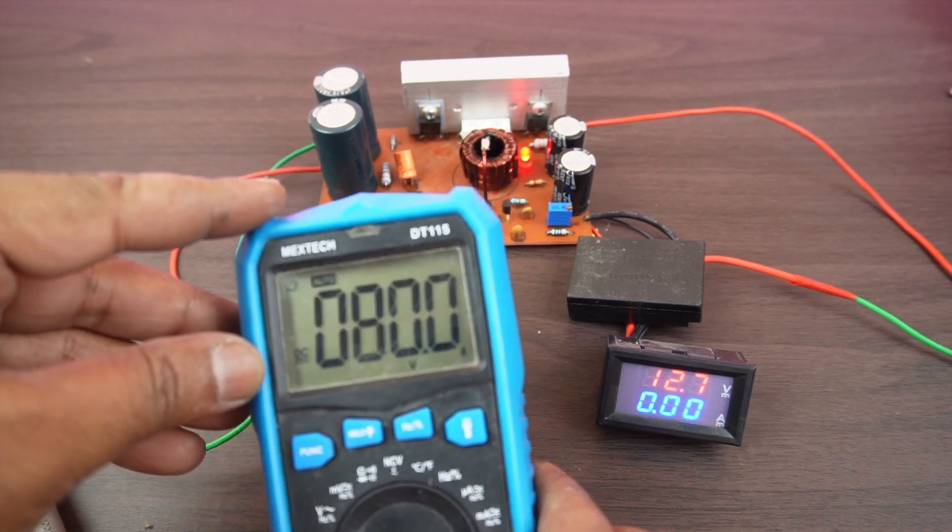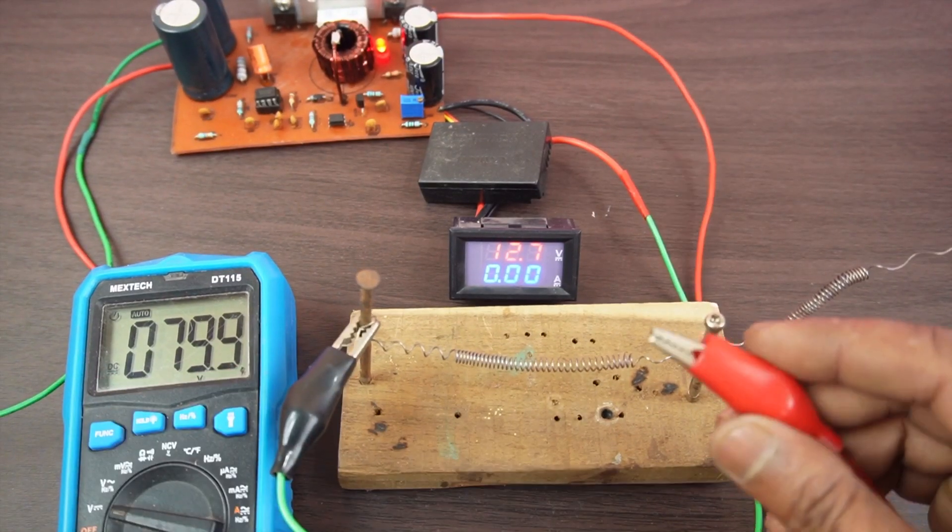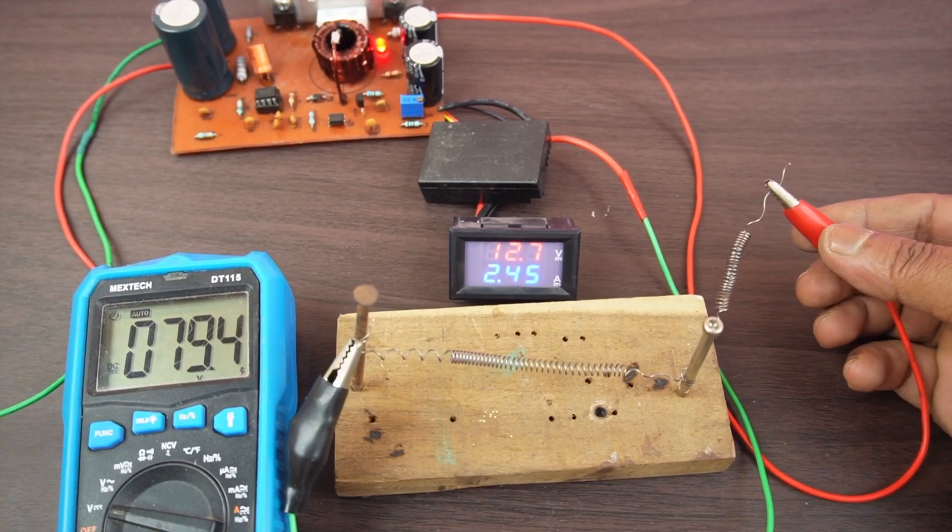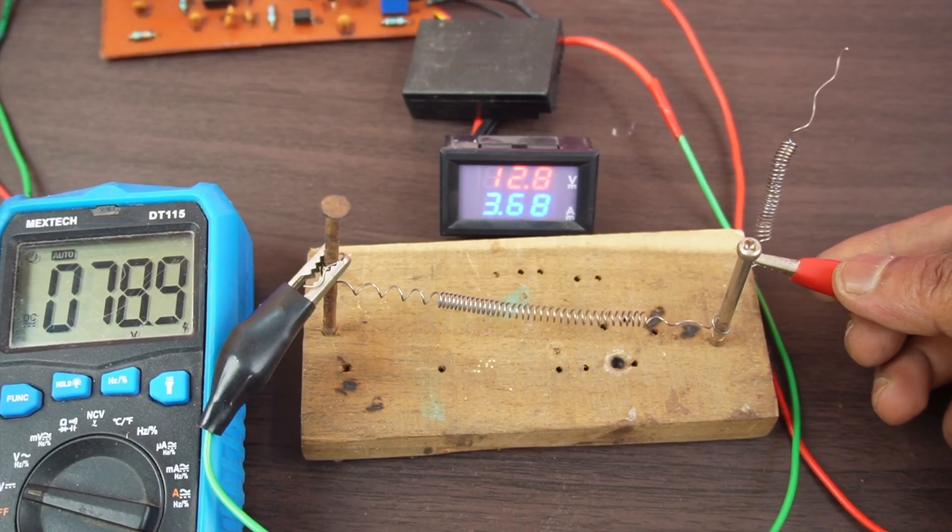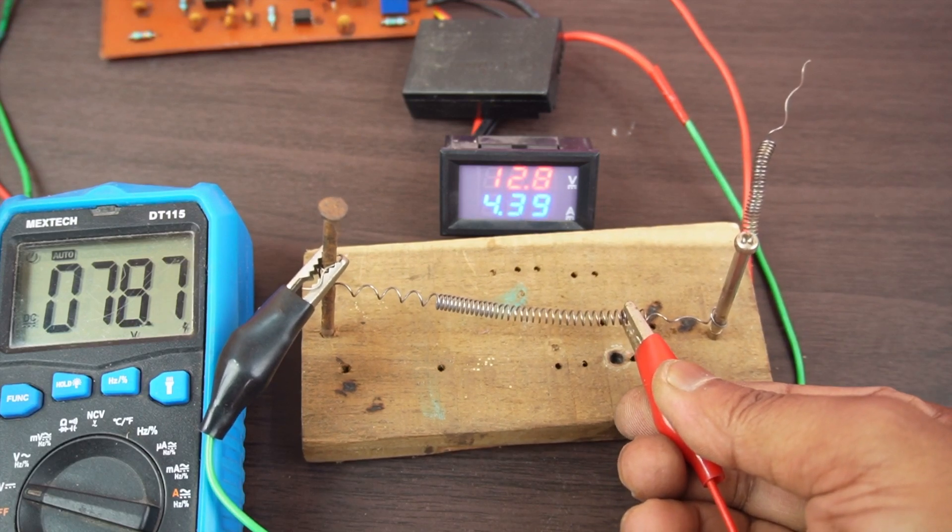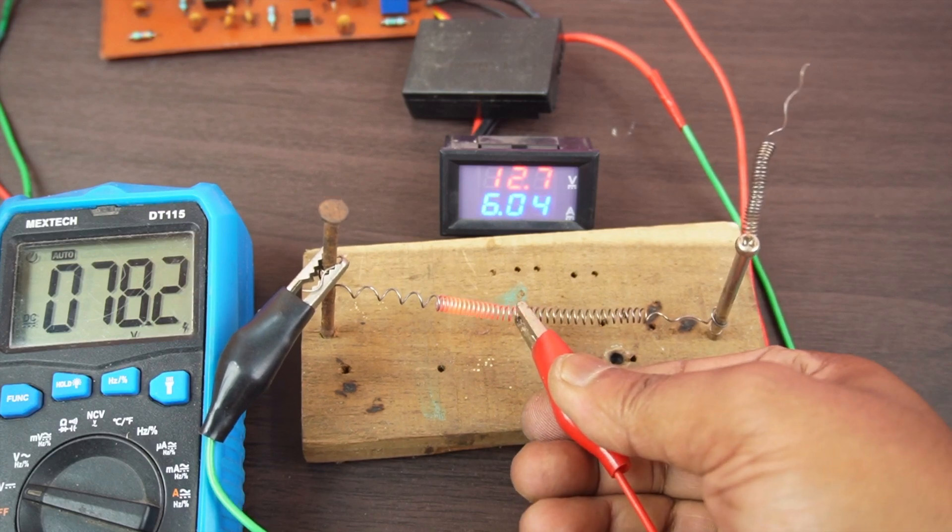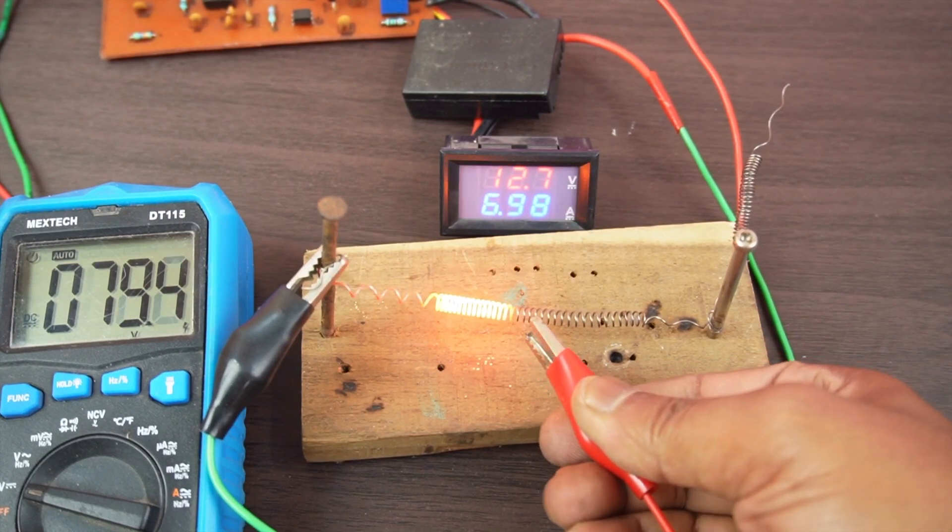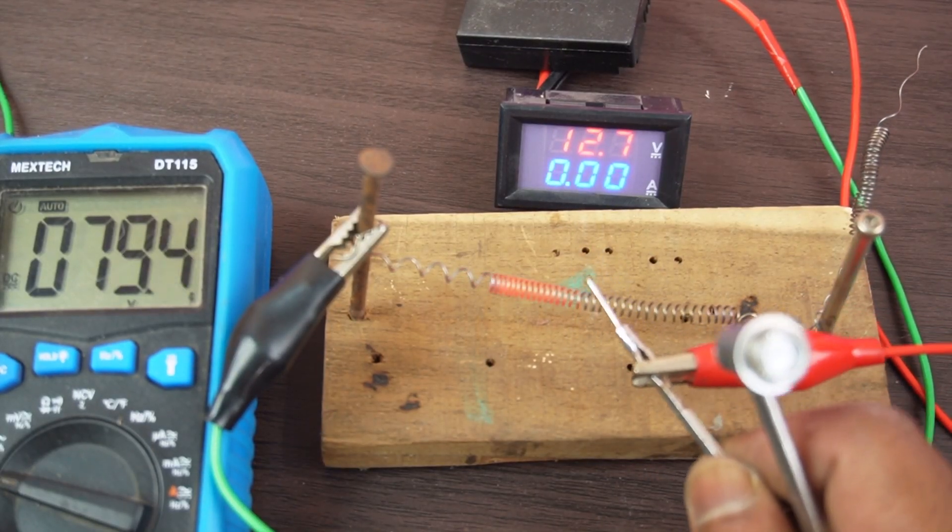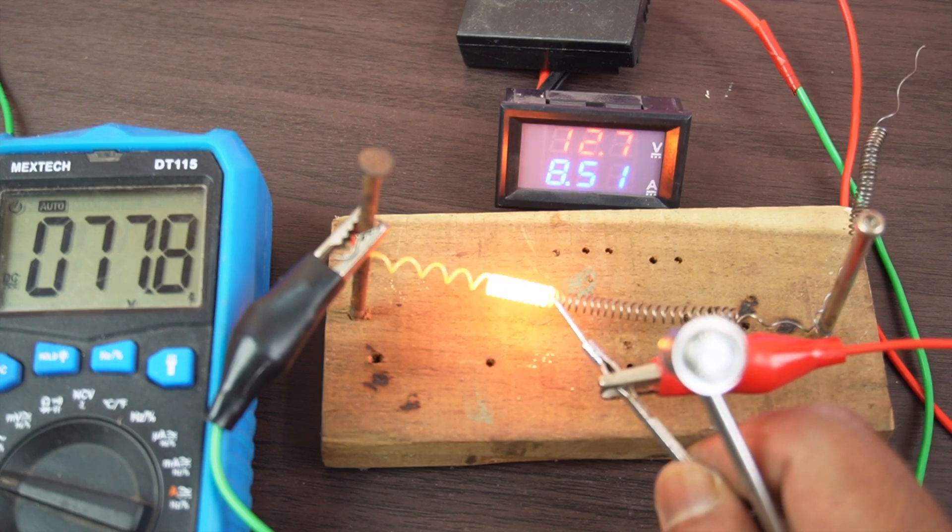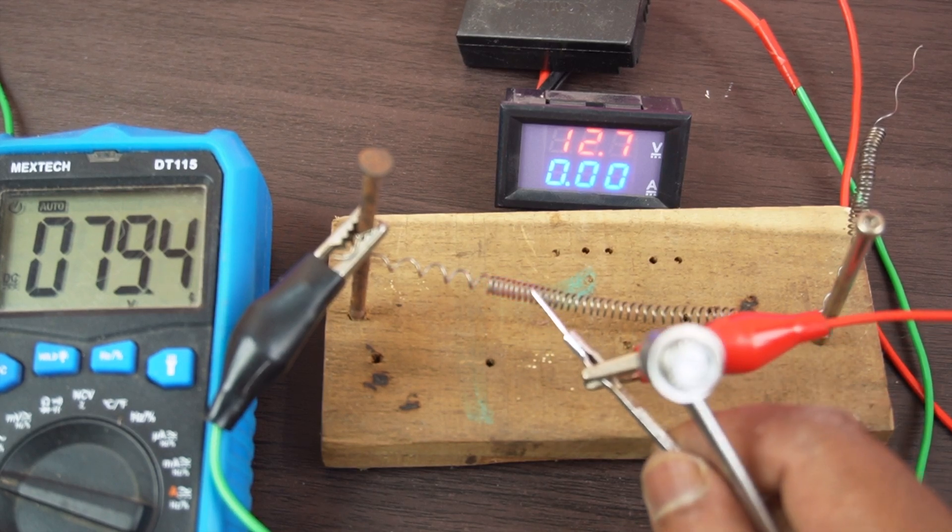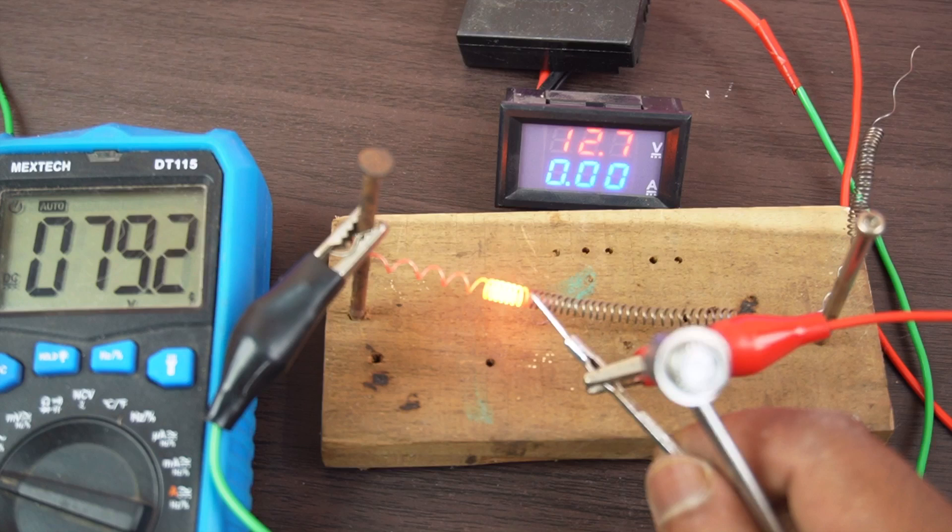As you can see, the input voltage is 80 volts. Here I am using nichrome wire to measure the output current. I am increasing the current but there is no voltage drop at all and it's very stable. At 10 amps of current, the voltage is dropping 0.1 volts.